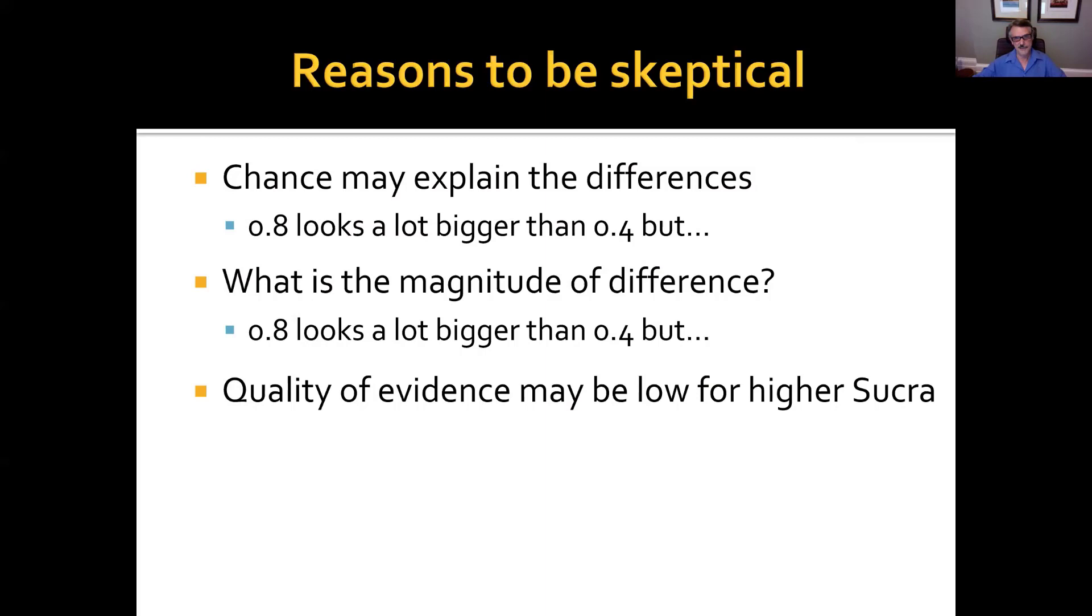Because there's lots of problems with this SUCRA. First of all, chance may explain the difference. 0.8 looks a lot bigger than 0.4 in a SUCRA, but chance might explain the difference. 0.8 looks a lot bigger than 0.4, but if we were to take odds ratios, they may not be that different. And if we were to take absolute effects, they may be very little difference. Well, those are important problems, but perhaps the most important limitation of SUCRA is that the quality of evidence may be low for a higher SUCRA.